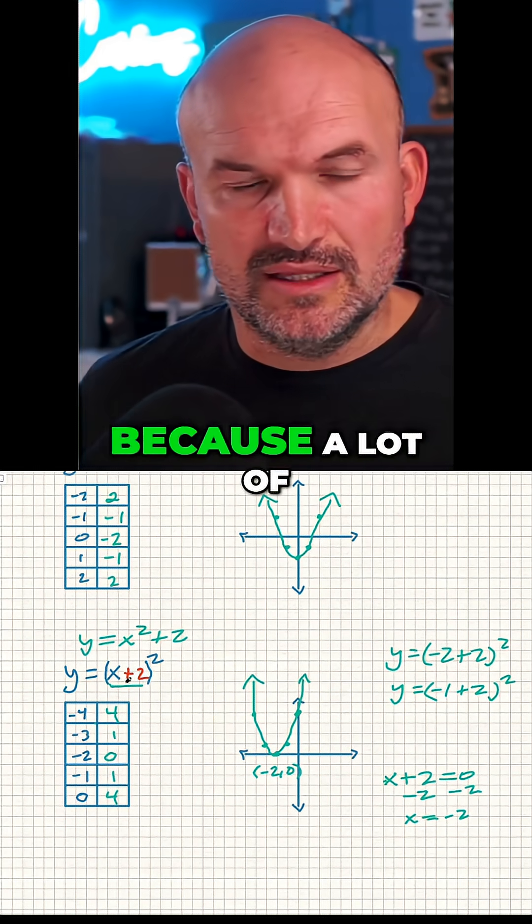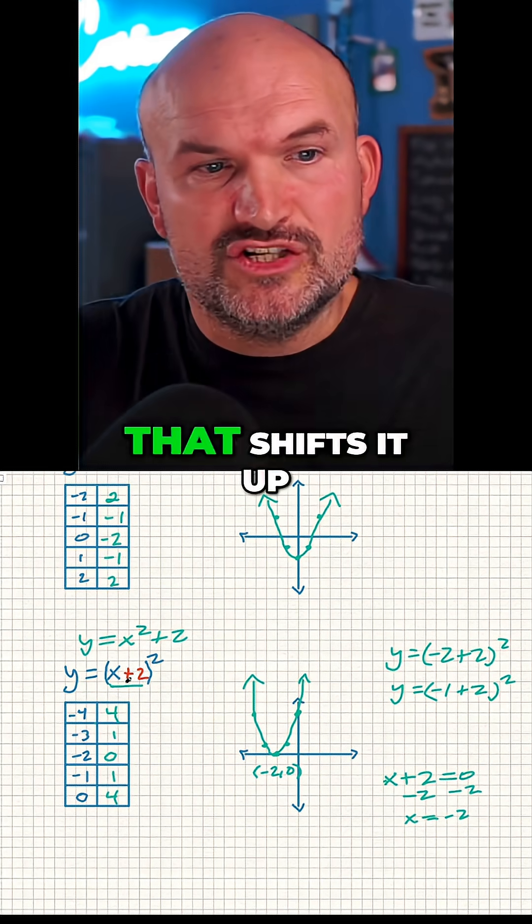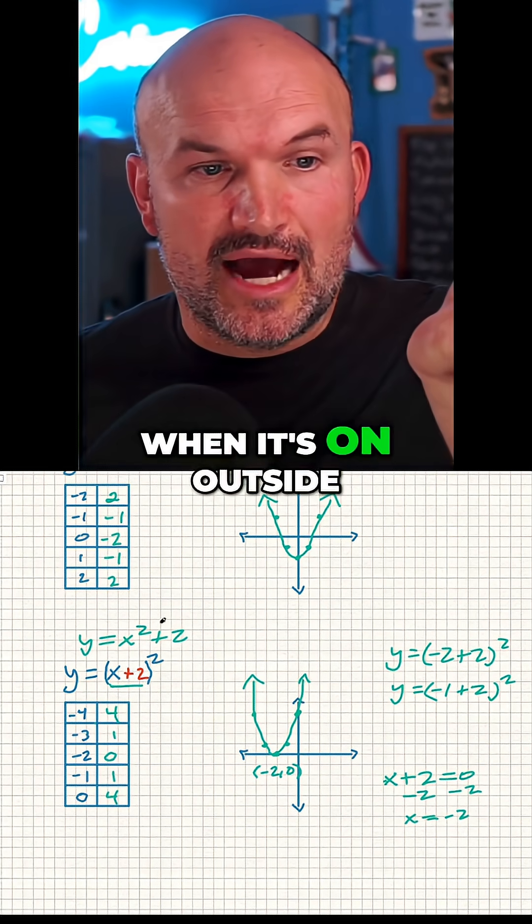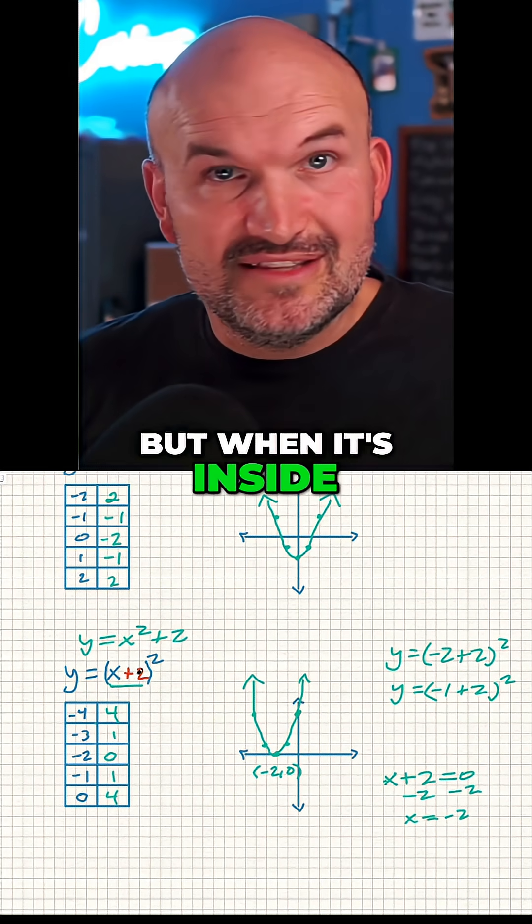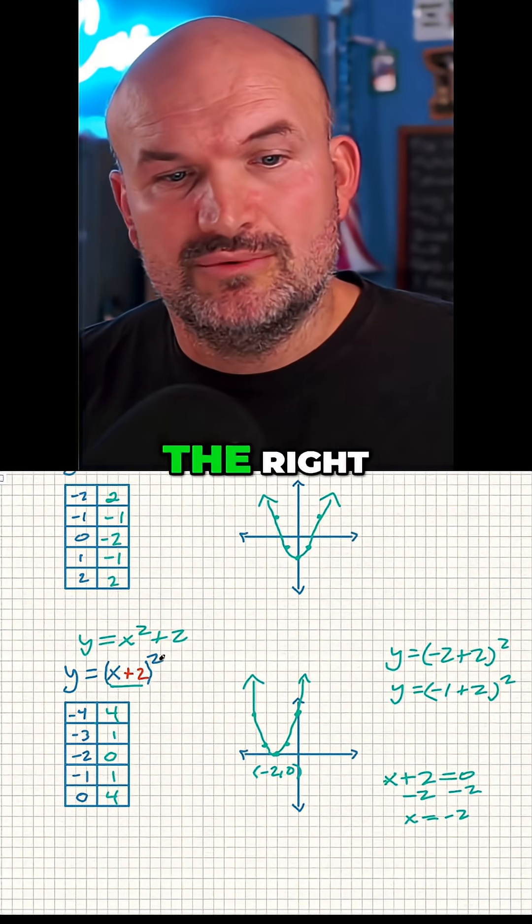This is really important because a lot of students will see the plus two and they know that shifts it up when it's on the outside of the function. But when it's inside the function, they think it will go to the right.